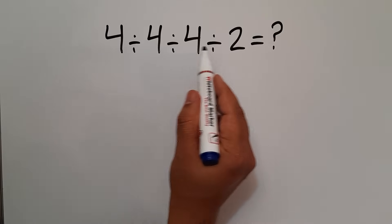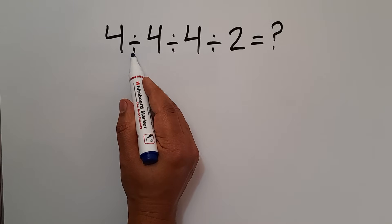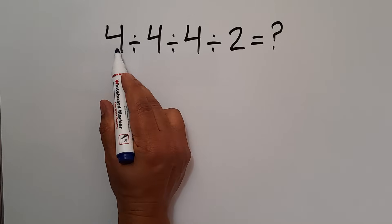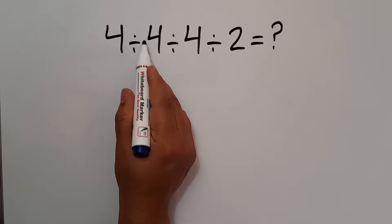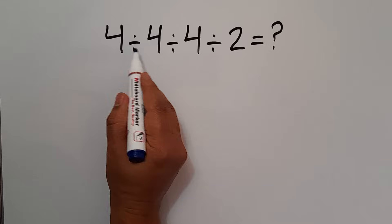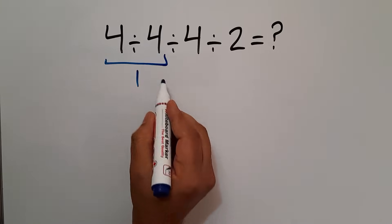In this expression, we have three divisions. As we know, when we have more than one division in one expression, we have to work from left to right. So first this division, then this division, and finally this division. 4 divided by 4 gives us 1.